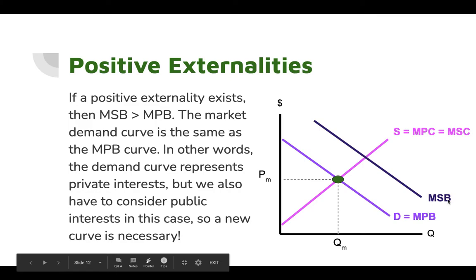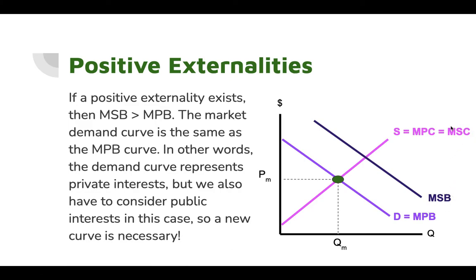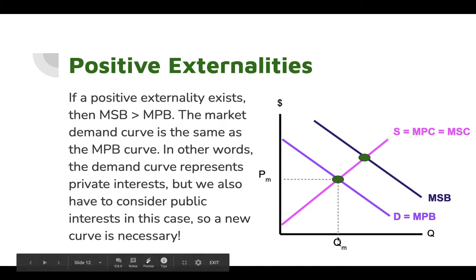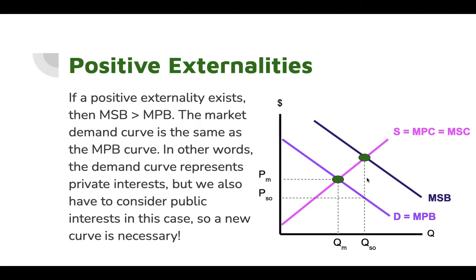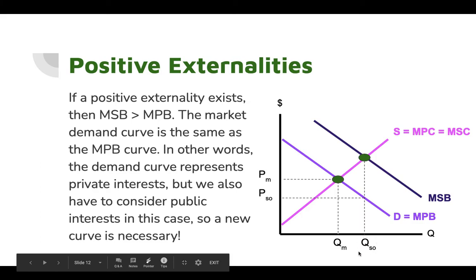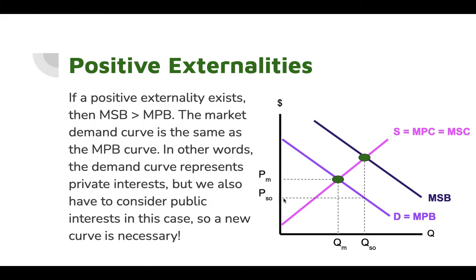Now we have a new point where the social benefit intersects with the social cost — that would be the socially optimal equilibrium. In the private market, the equilibrium is where price is PM and output is QM. But the socially optimal output is QSO, and the socially optimal price would be lower. Don't get tricked going straight over from that equilibrium — in order for people to buy more of this good, the price would have to come down. The original market demand curve shows that in order for people to buy QSO, the price would have to be lower.